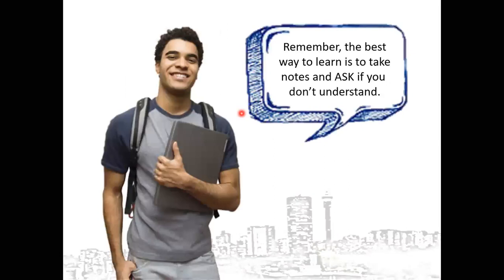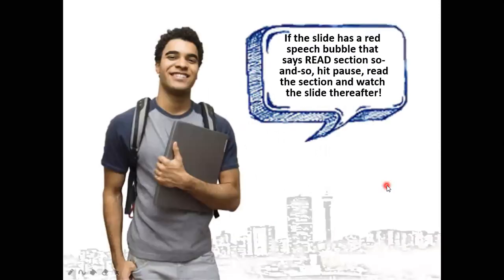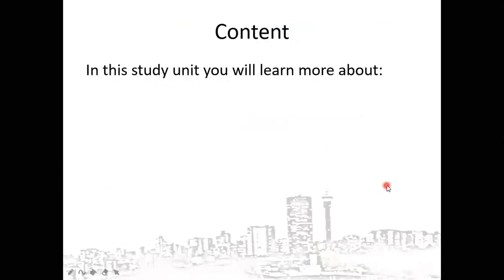The first topic is the interdependence of major sectors, markets and flows in a mixed economy. Our objectives with regard to the first unit: we shall take into account the three methods of calculating national income, which consist of the production approach, the income approach, and the expenditure approach — also known as the spending approach.